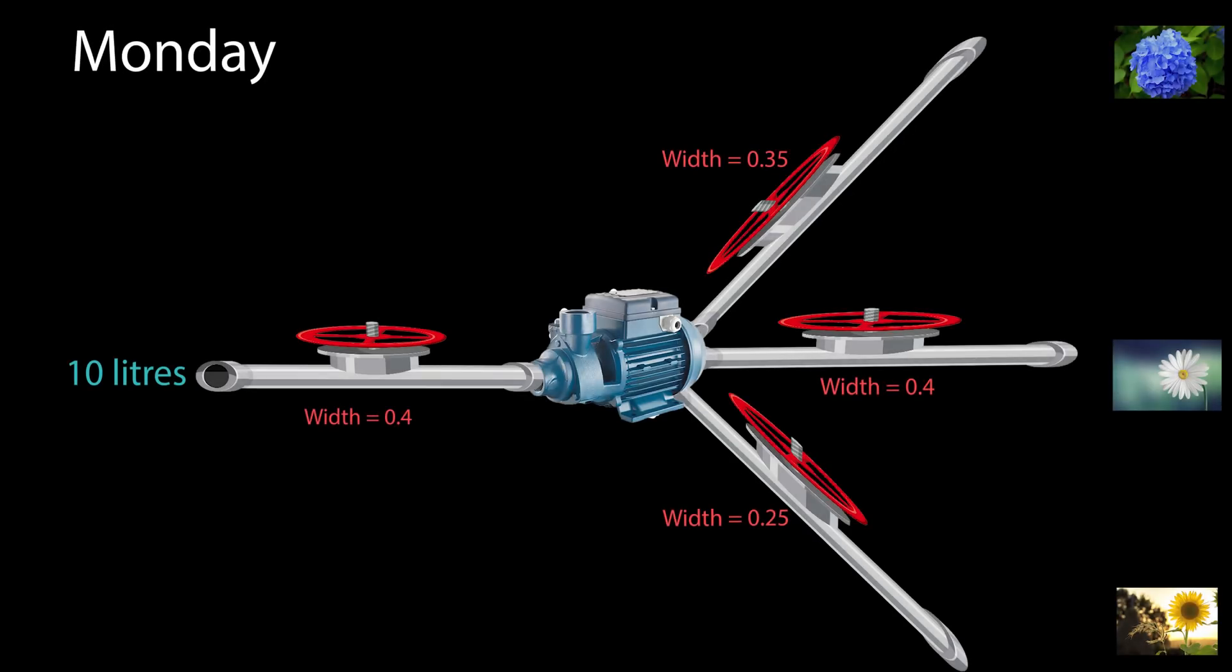On Monday, as usual, 10 litres of rainwater enter the system through the left pipe. Now, the initial widths of the pipes are randomly configured by the system. We can think of this as hypothesis 1. The first possible configuration of the pipe widths are shown on the screen. As we can see, on a Monday, 10 litres of water go into the pipe.